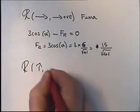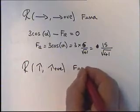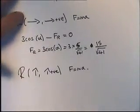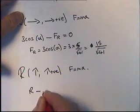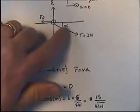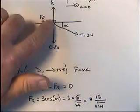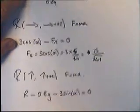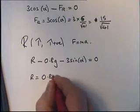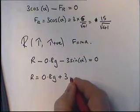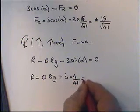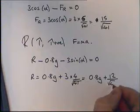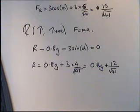Now we resolve vertically, taking up as positive, using F equals ma with A equals zero. Forces up are positive and forces down are negative. So we've got R minus 0.8g, and we also subtract the component of the 3 newtons acting downward, which is 3 sin α, and that equals zero. So R equals 0.8g plus 3 sin α. Since sin α is 4 over root 41, R equals 0.8g plus 12 over root 41.